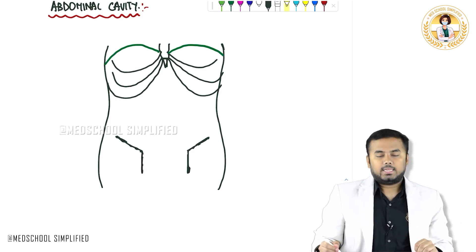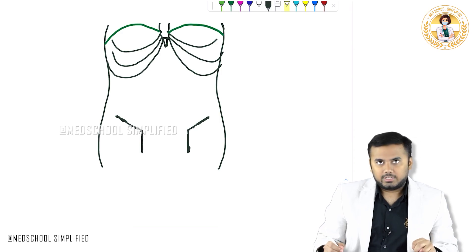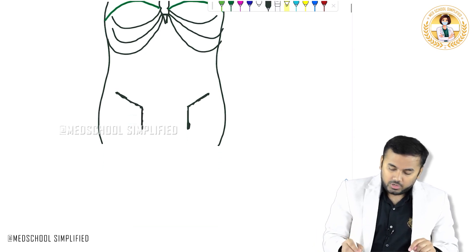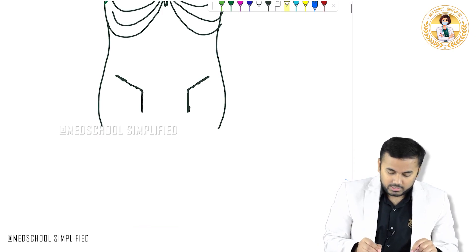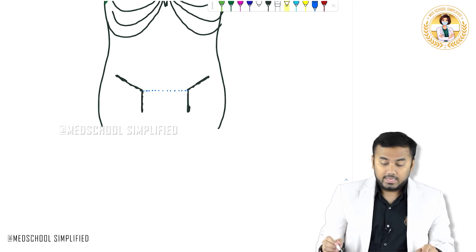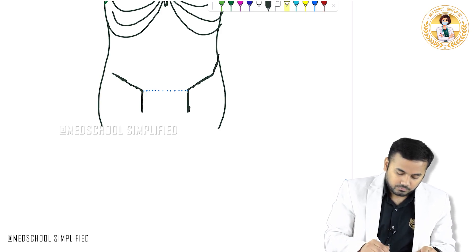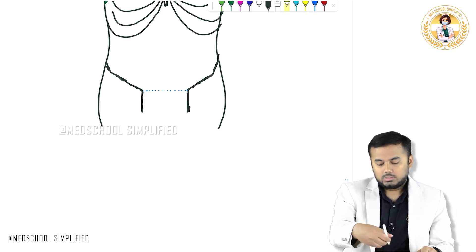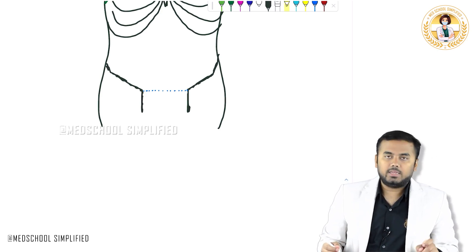Here you can see two types of cavities. Before I draw these cavities completely, you should know one very important thing: if I am drawing a dotted line here, this is the pelvic inlet. What do I mean by pelvic inlet? This is the place of entry into the pelvic cavity — this is called the pelvic inlet.